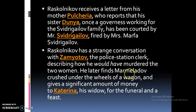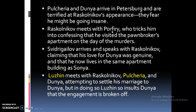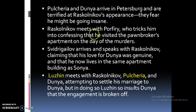Raskolnikov later finds Marmeladov — Sonya's father, whom he met in the tavern — crushed under the wheels of a wagon. Marmeladov dies, and Raskolnikov gives a significant amount of money to Katerina as a widow for the funeral. Pulcheria and Dunya arrive in Petersburg and are terrified at Raskolnikov's appearance — after the murder he is completely changed physically and mentally, and they fear he might be going insane. Raskolnikov meets with Porfiry, the investigator, who tricks him into confessing that he visited the pawnbroker's apartment on the day of the murders. Porfiry knows Raskolnikov is the murderer but has no proof.